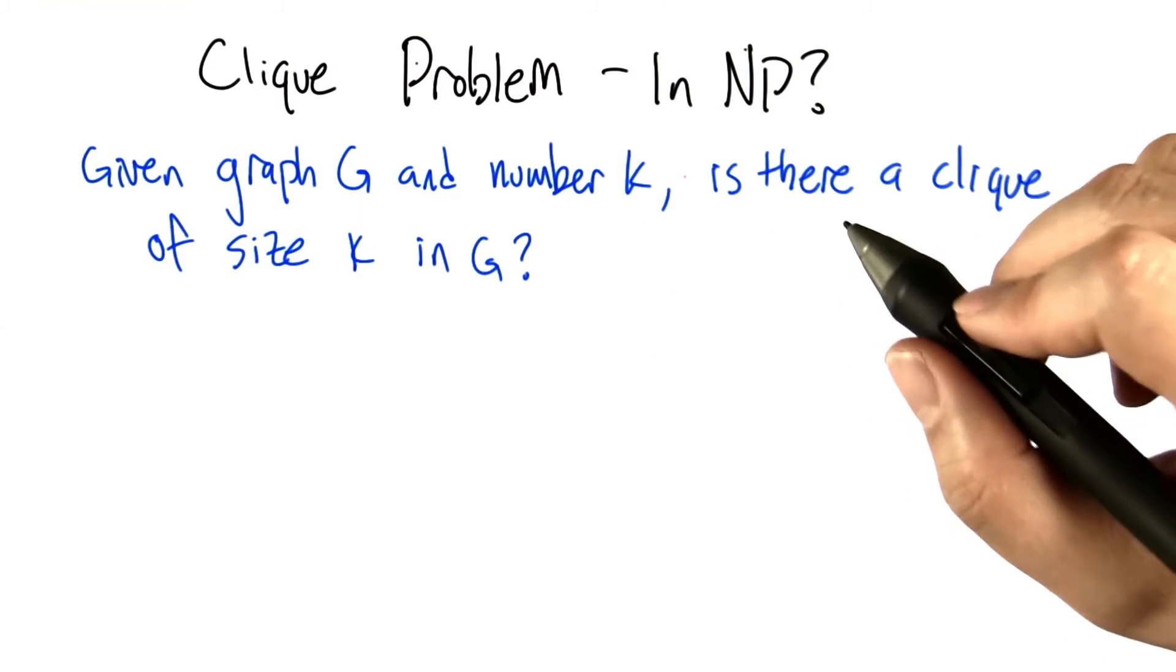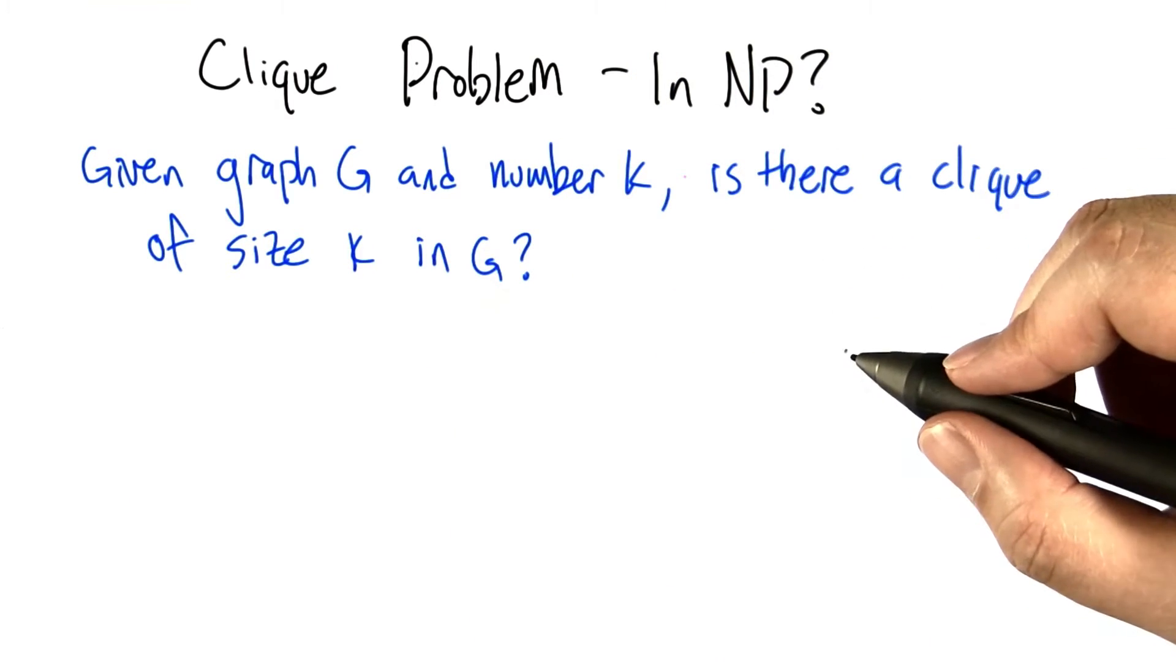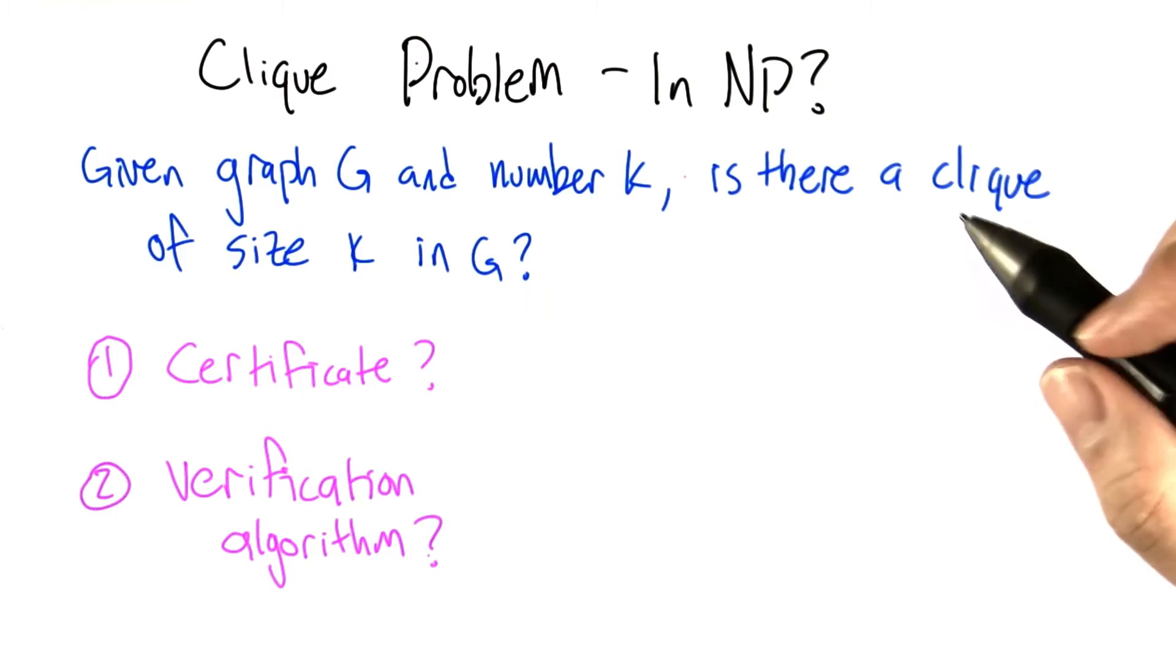Is this decision problem in the set NP? Remember that we need to show two things for it to be in NP.